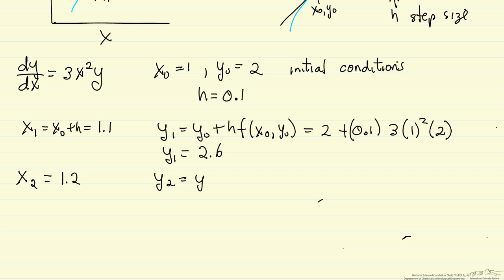y2 is y1 plus h times the function. Now I've evaluated at x1 and y1. And again, if I substitute in the numbers, then I'll calculate a value of y2, 3.5438.